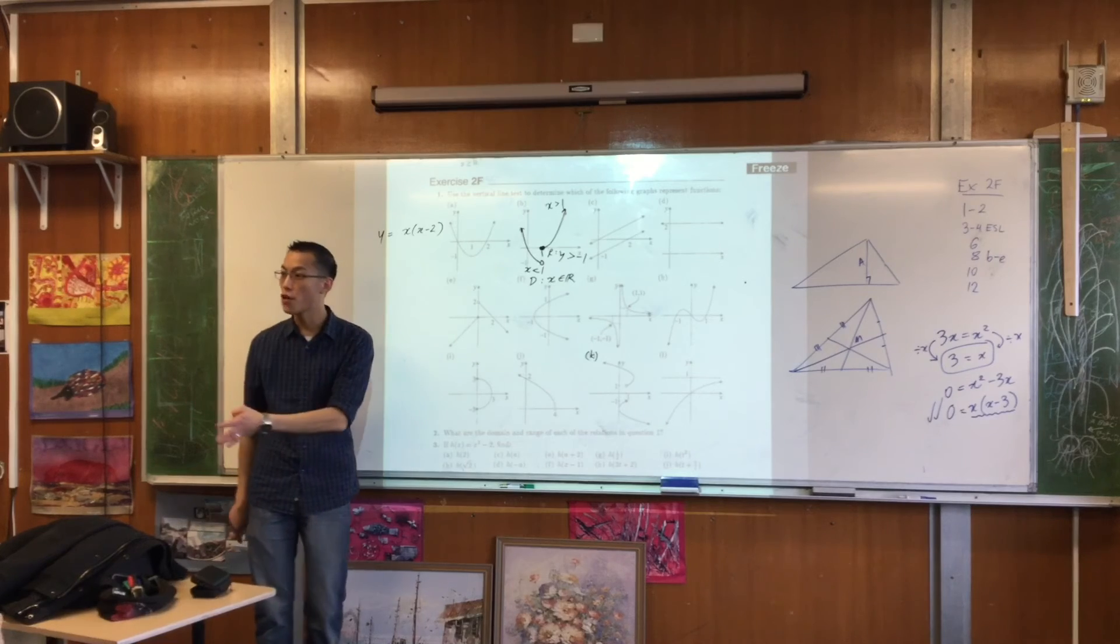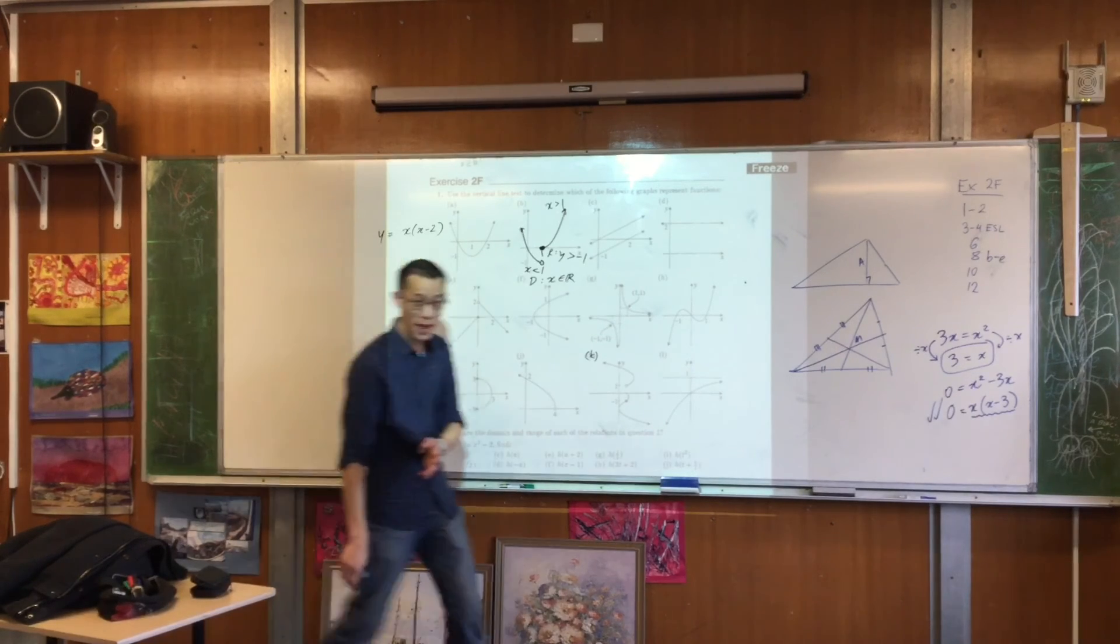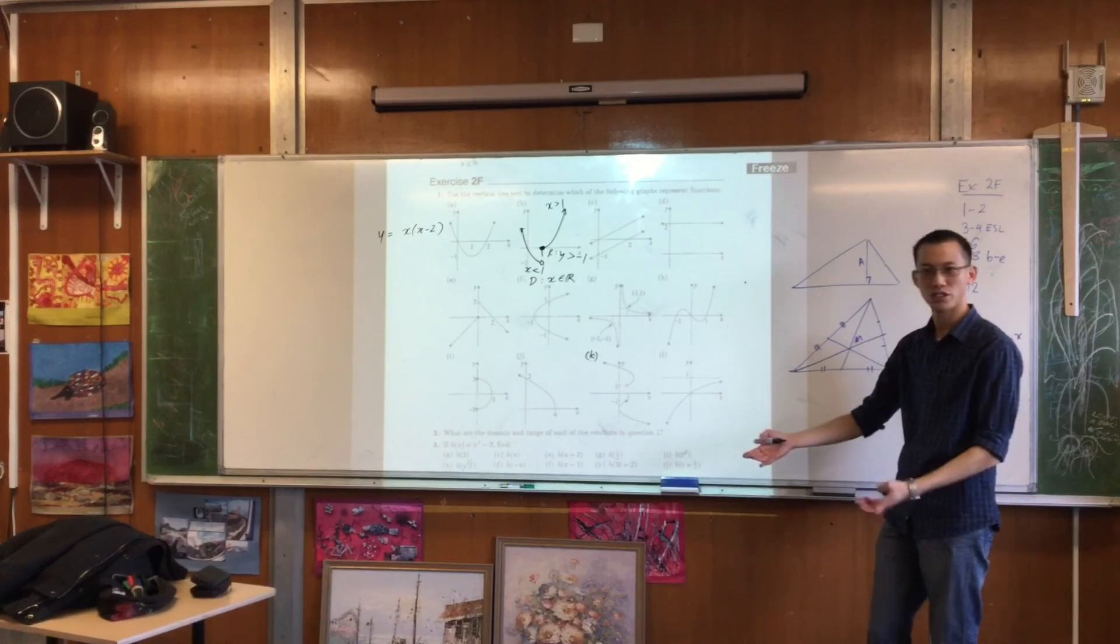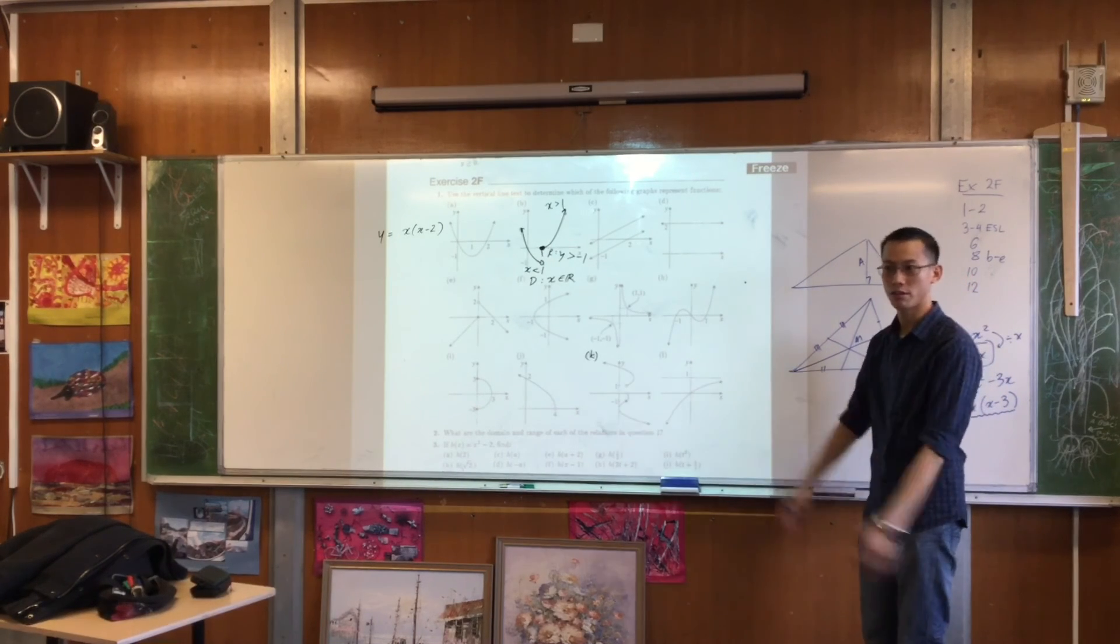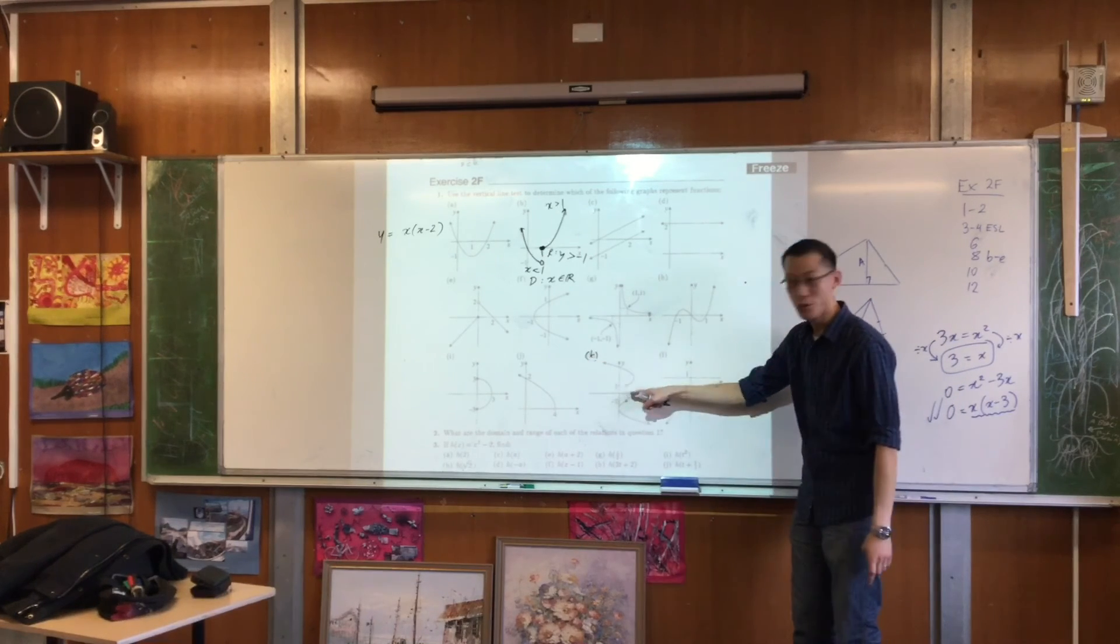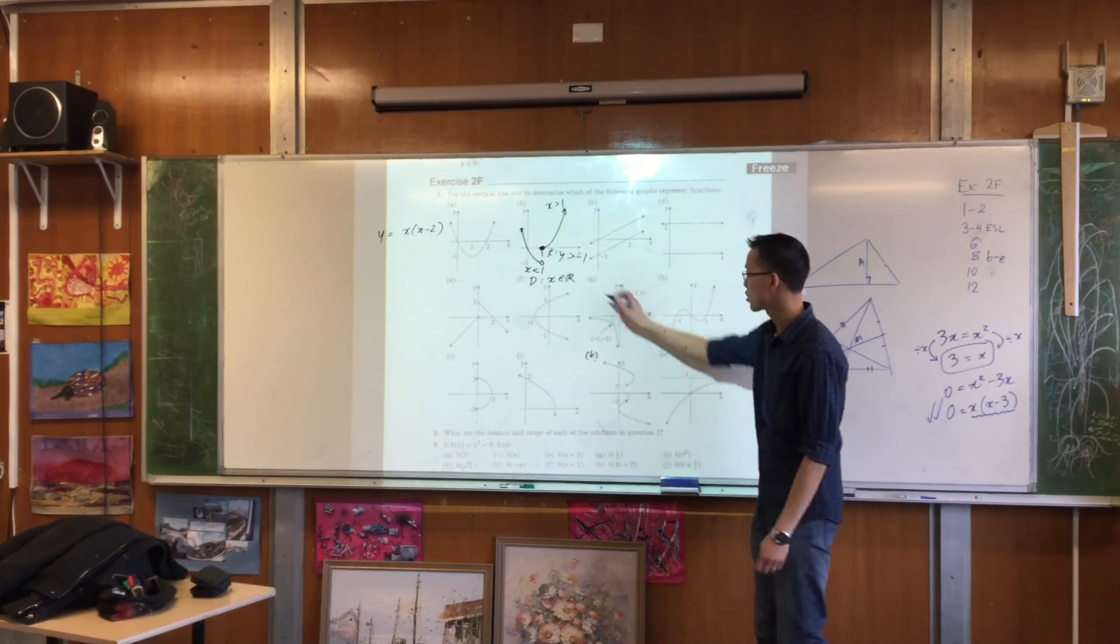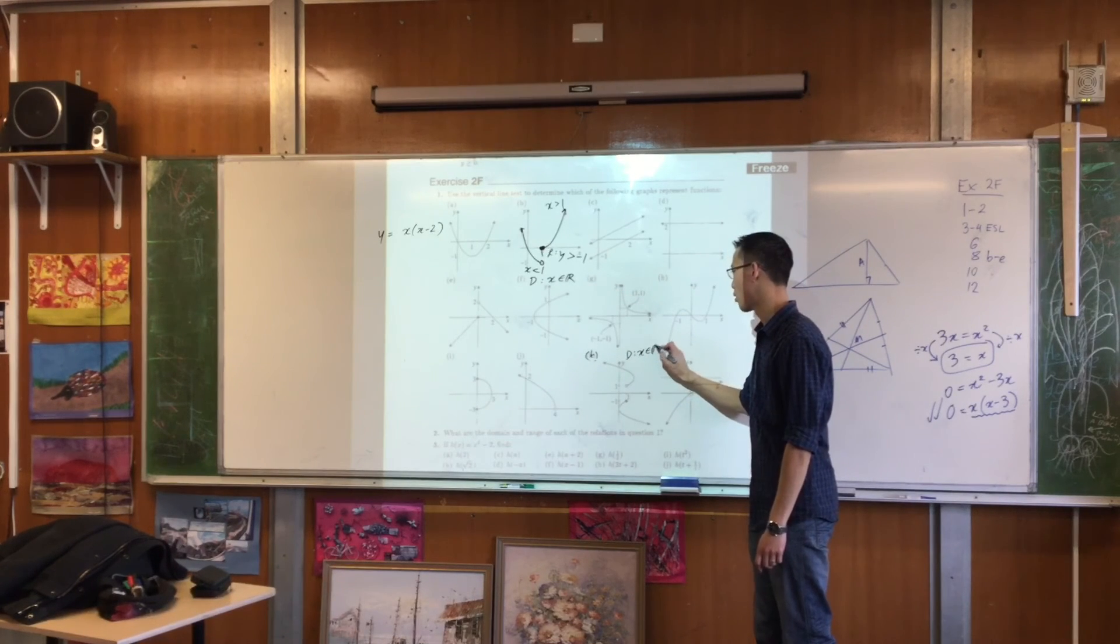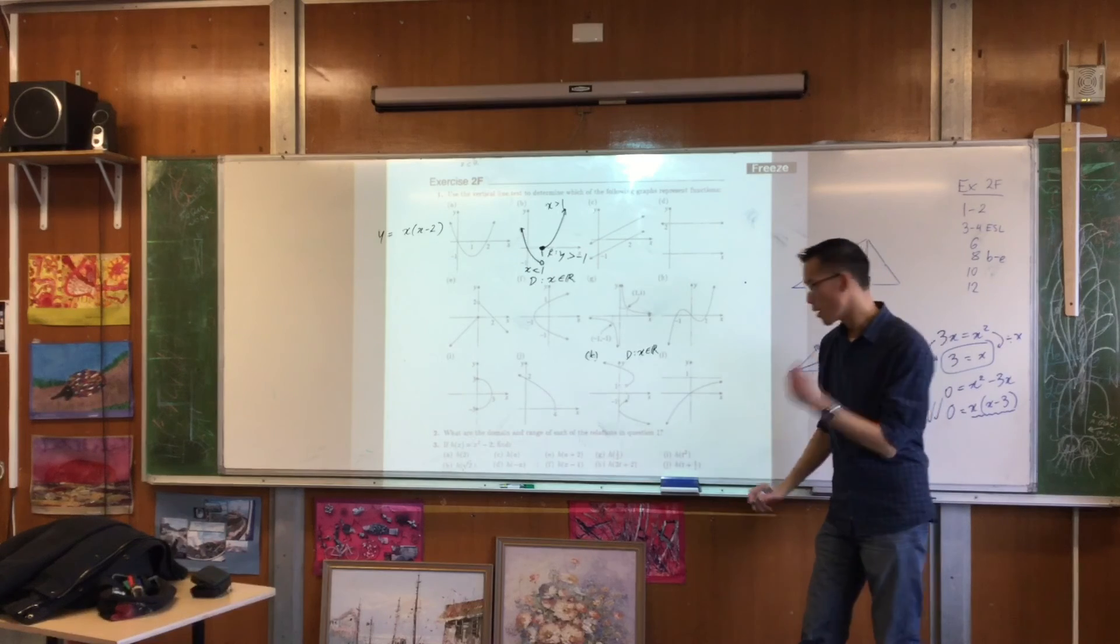But now we think about domain. Are there any x values that you can find where the function doesn't exist, where the graph doesn't go? The answer is no. In fact, you go all the way here, you go all the way there. In the middle you can get multiple times. So therefore, just like before, the domain will be x is all real values.